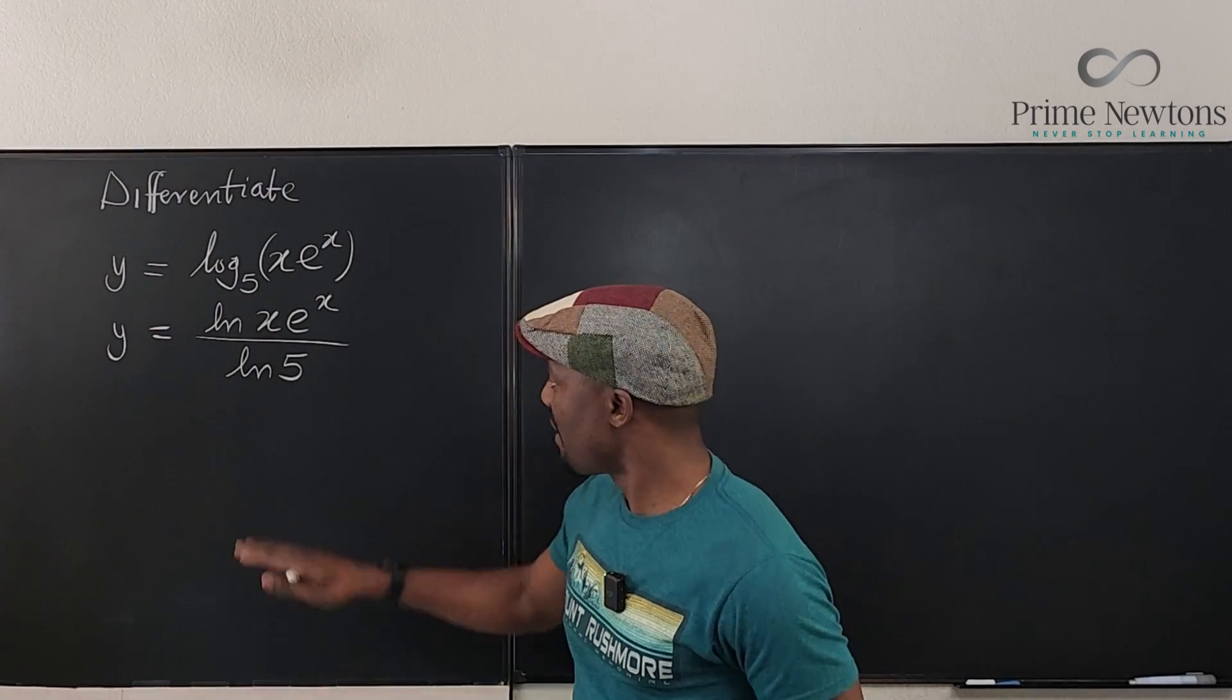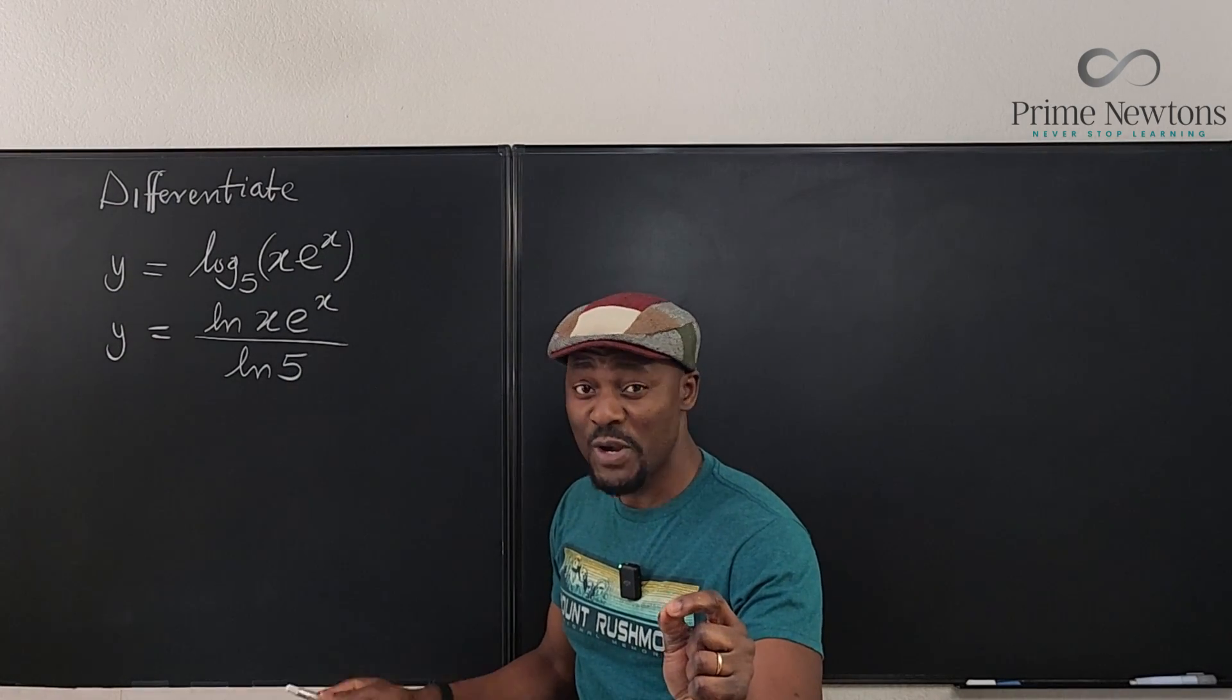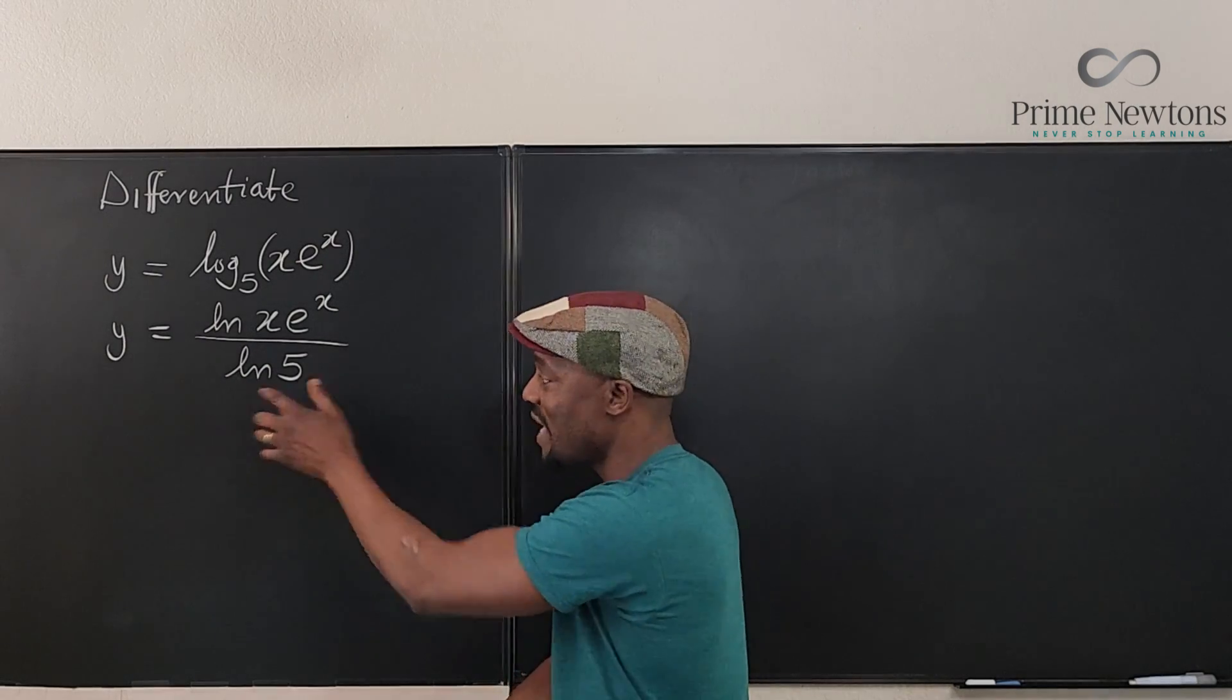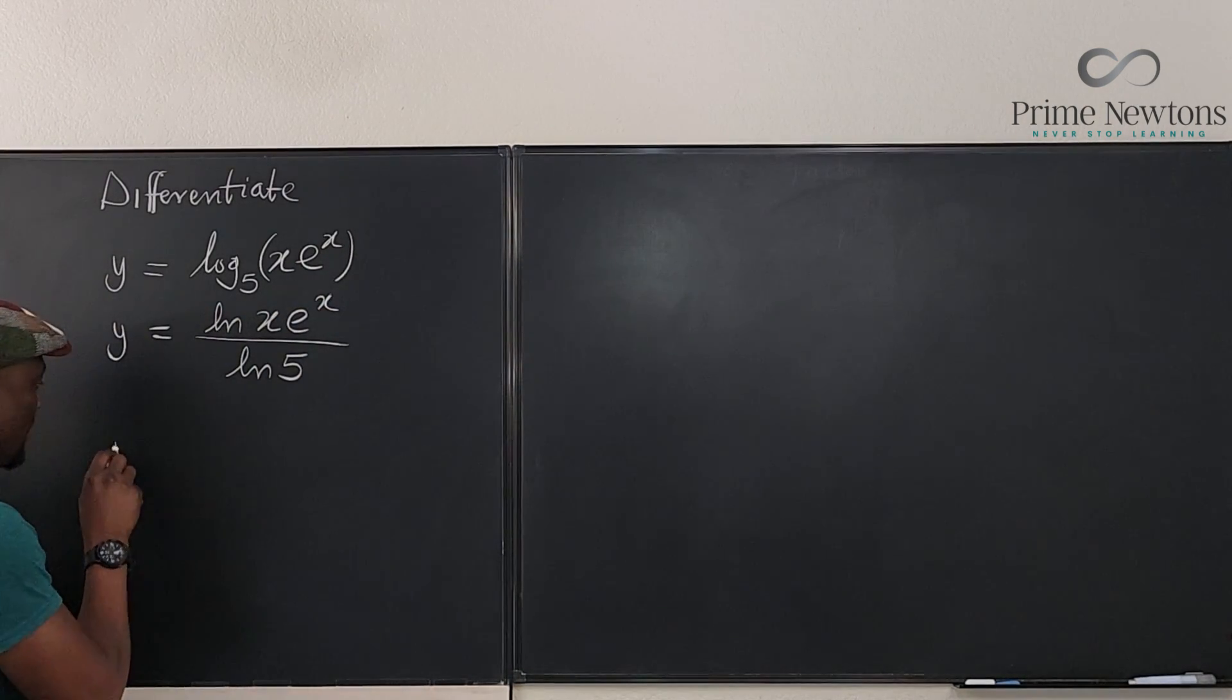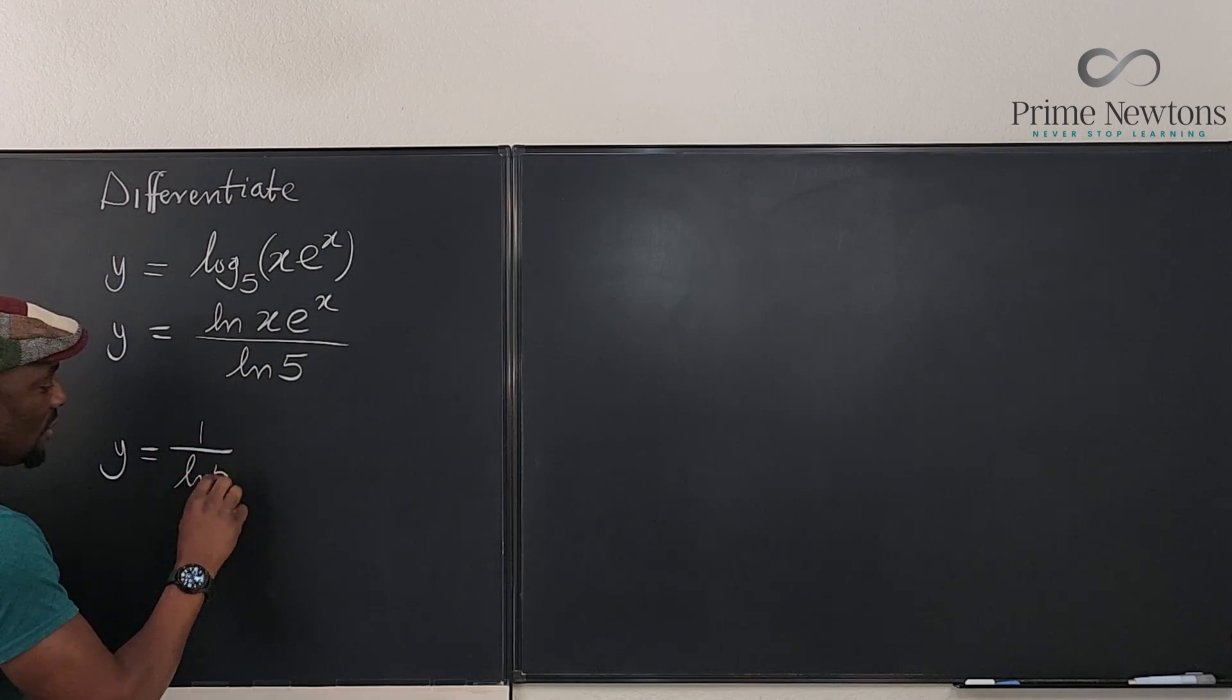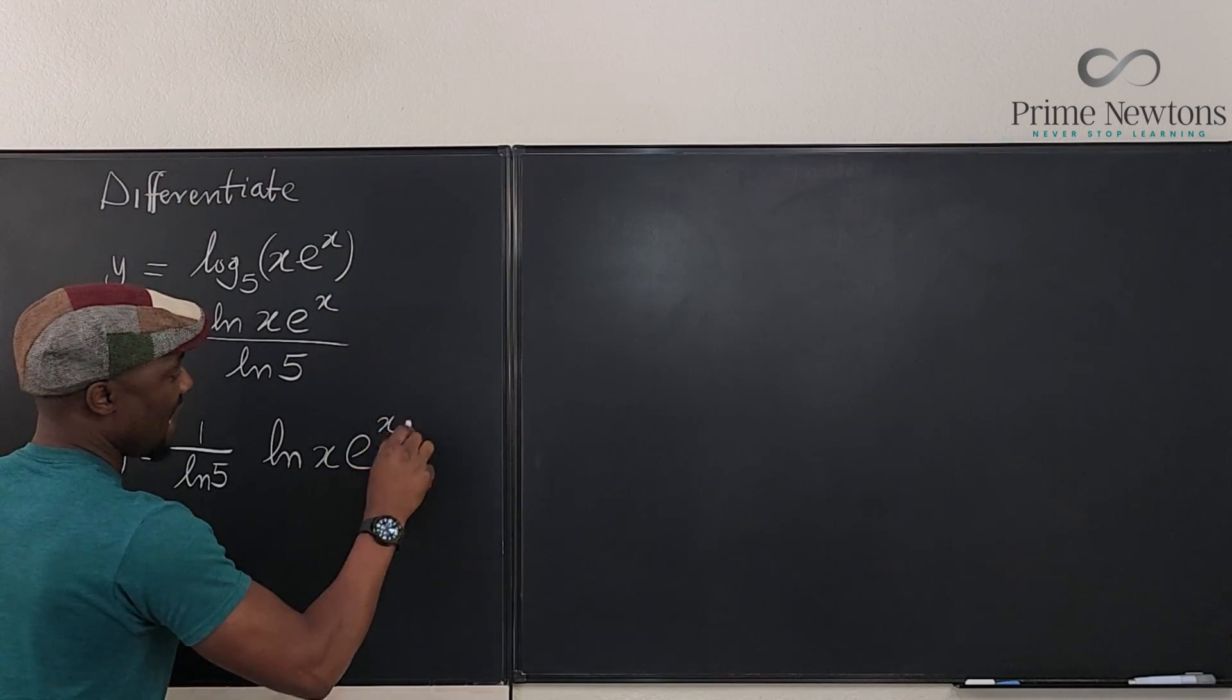So with what we have, I'm going to make you see this, that the natural log of five is a number. So when you're taking your derivative, don't worry about this. You don't need to do anything with this. So we're going to pull it to the side. So let's pull this, y will be equal to one over the natural log of five, multiplied by ln of xe to the x.